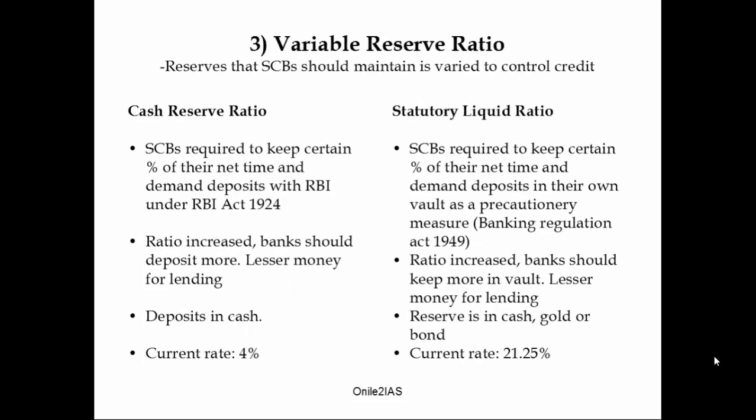The next measure is variable reserve ratio, used to control credit by varying the percentage of reserves that scheduled banks are supposed to maintain. The first one is cash reserve ratio — the percentage of net time and demand deposits that scheduled banks are supposed to maintain with the RBI. To control inflation, RBI increases this percentage, leaving banks with little money to lend to the public. The current rate of cash reserve ratio is 4%, and it should be maintained only in cash, not in kind.